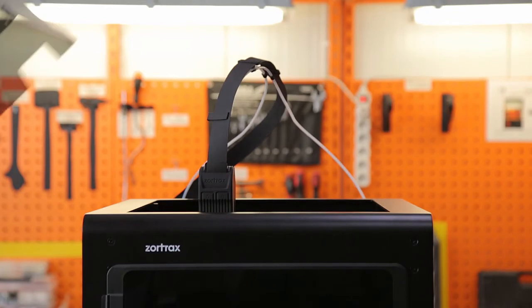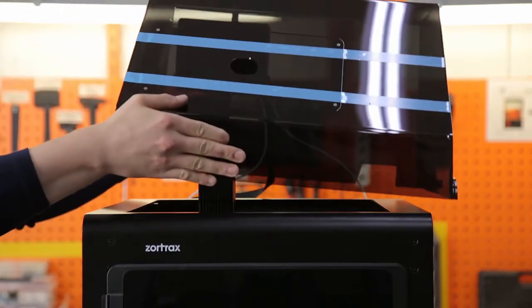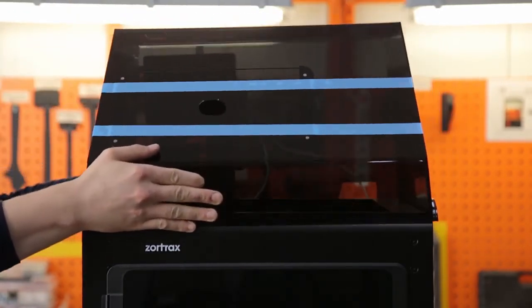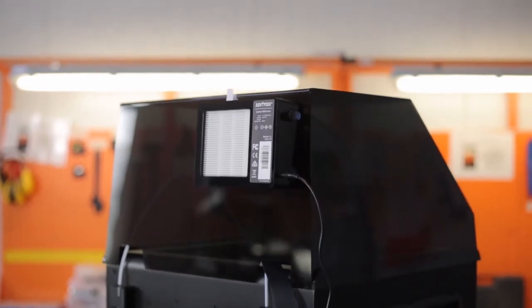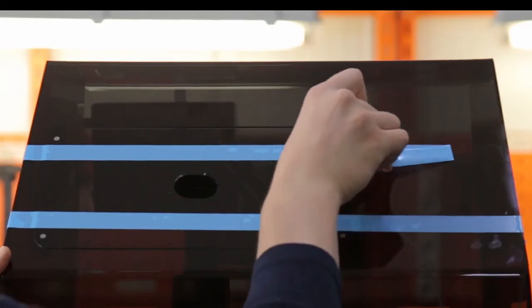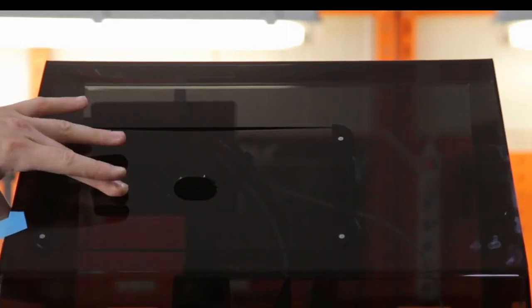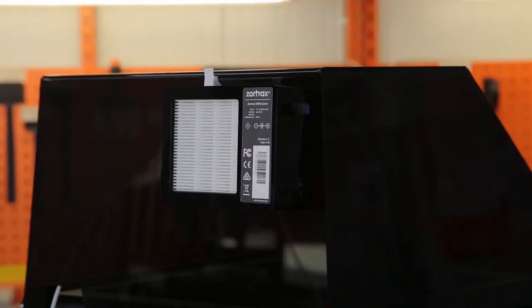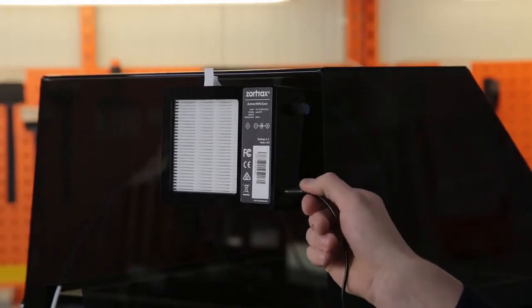Put the Zortrax HEPA cover on the printer and make sure the extruder cable fits in the hole at the back of the cover. Take off the safety tape. Finally, you'll need to plug in the power cable to the filter module and adjust the knob.